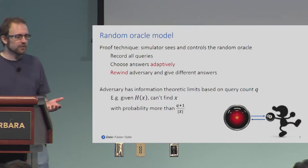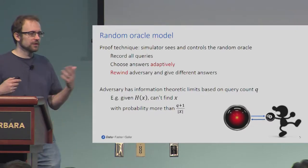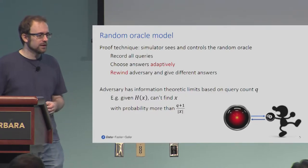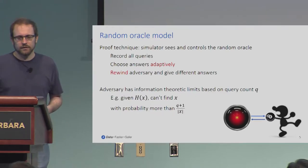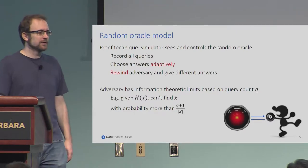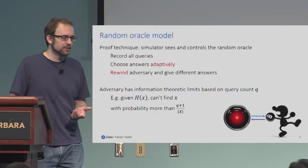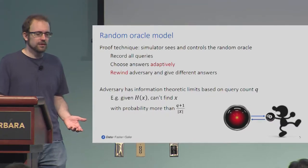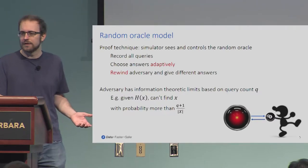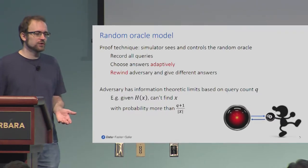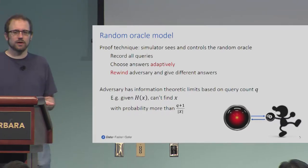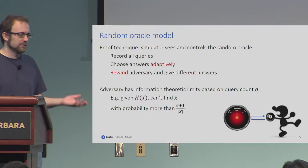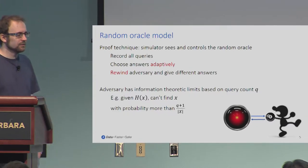You have all these proof techniques where the simulator can control the random oracle, see all the queries, choose answers adaptively, rewind the adversary, and so on. Furthermore, you get some very simple information-theoretic limits about what adversaries can do on certain problems. For example, if you're given H of x, the adversary can't find x with probability more than (q+1) over the domain size, because he gets q shots to query the random oracle and then maybe one guess with his output. There's a sort of trivial proof of that in the classical random oracle model.